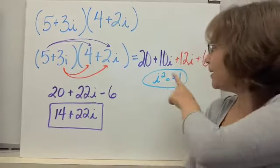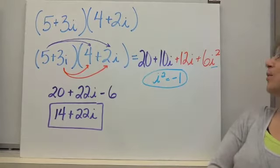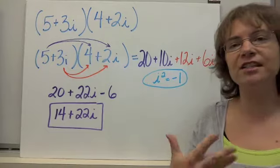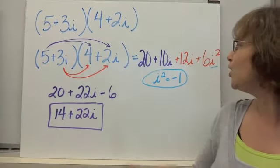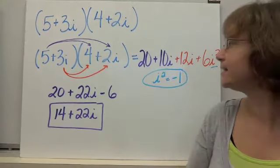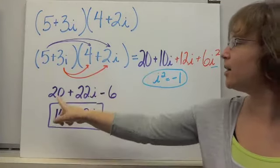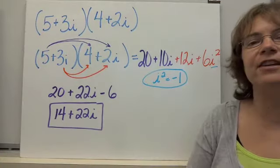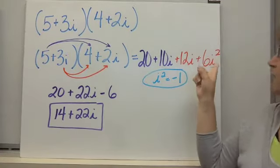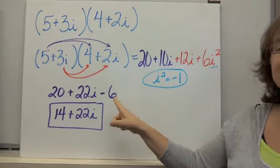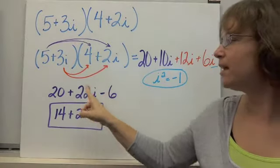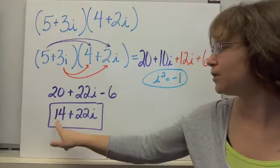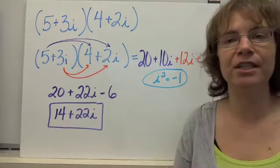We want to remember i squared is equal to negative 1. So we're going to combine like parts, just like when we were multiplying polynomials. We have 20, then 10i plus 12i which gives us 22i. And 6i squared is the same as negative 6. Combining the real parts: 20 minus 6 is 14, giving us 14 plus 22i.